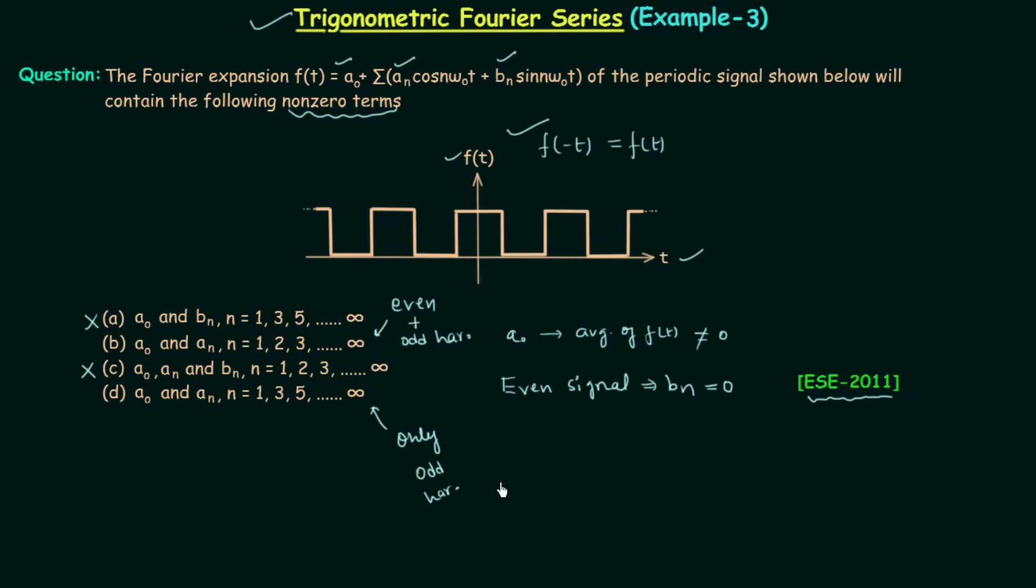So the answer is now dependent on the harmonics and you cannot solve this question directly because I have not explained the important property. The property is known as hidden symmetry. In case of Fourier series expansion, if there is any signal which can be derived from the half wave symmetric signal then the harmonics present will only be odd.